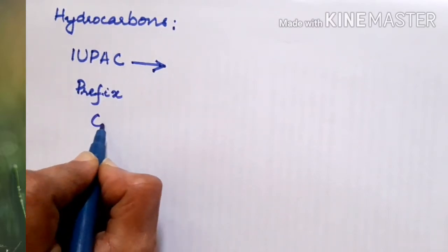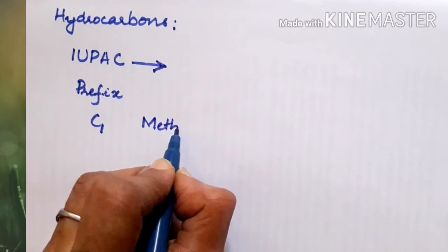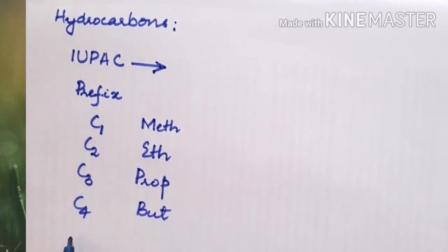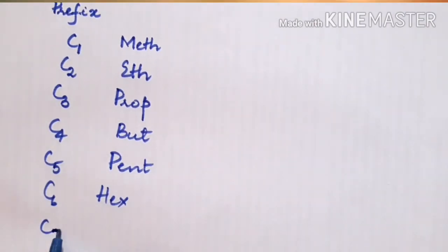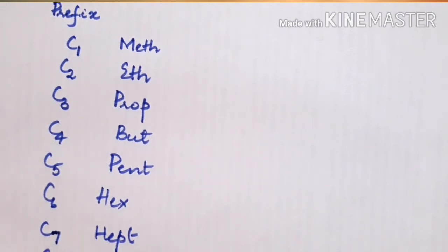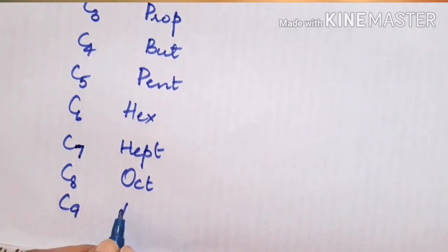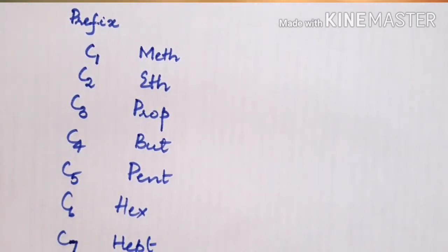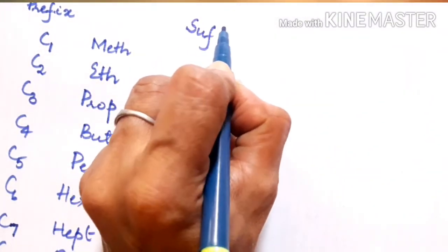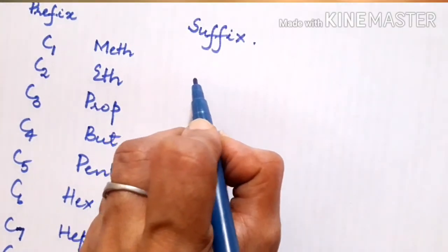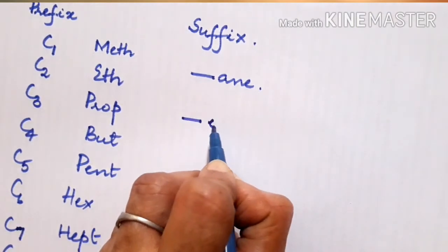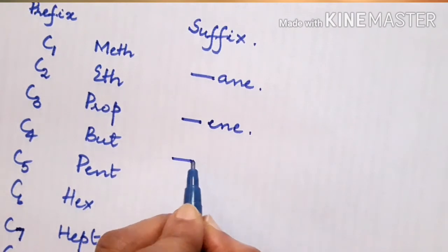The prefixes are: C1 is meth, C2 eth, C3 prop, C4 butt, C5 pent, C6 hex, C7 hept, C8 oct, C9 non, and C10 dec. These are the prefixes that are followed, whereas the suffixes are supplied depending upon what is the general formula. If it is alkane, the suffix will end with -ane, and if it is alkene, the suffix will be -ene, and if it is alkyne, it will be -yne.